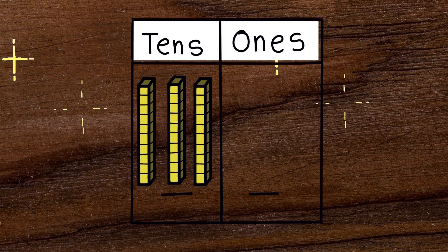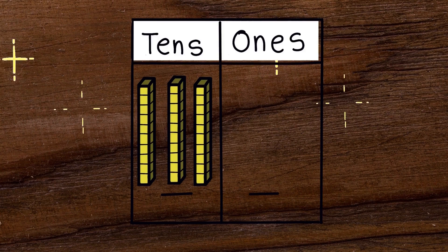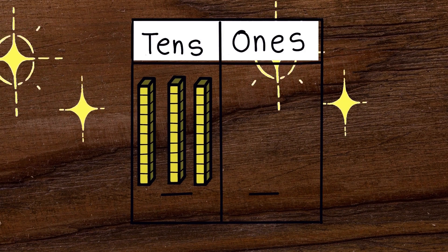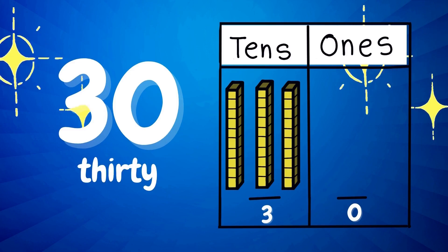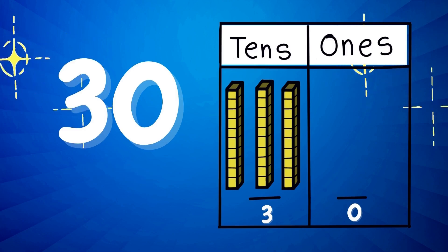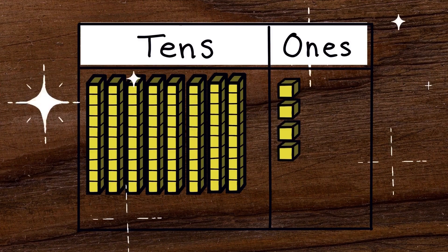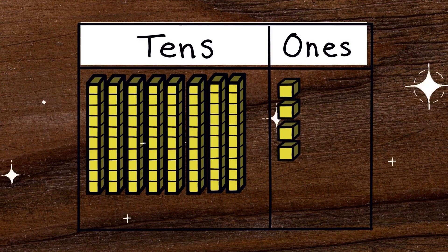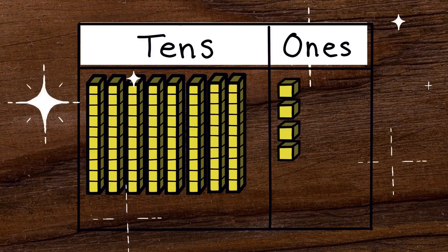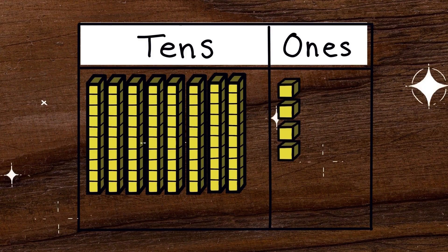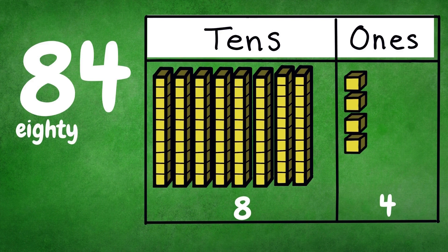This number has two digits: three tenths and zero ones. Which number is it? Thirty! Next number. It has two digits: eight tenths and four ones. It is number eighty-four!